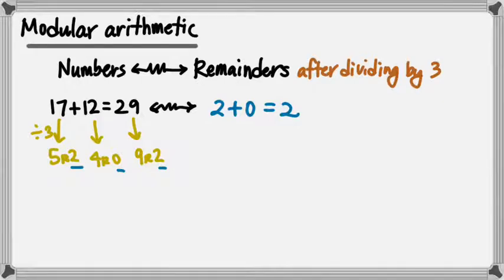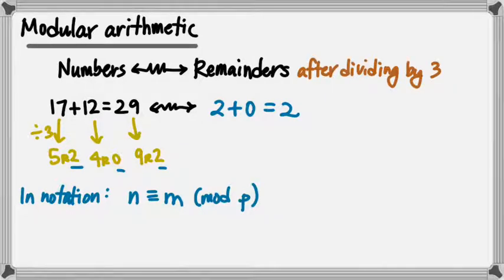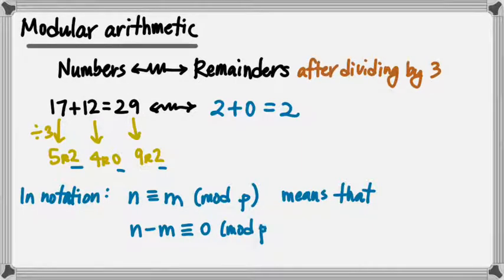So modular arithmetic is arithmetic done just with the remainders after you divide by a fixed number. And so the way that we write this in notation is we write that a number is congruent to another number, where we use this triple equals, this is an equivalence sign, mod p here. And the definition is that the difference of the two numbers here, n minus m, is congruent to 0 mod p. Congruent to 0 mod p means is a multiple of p. Because when you divide it by p, the remainder is 0.